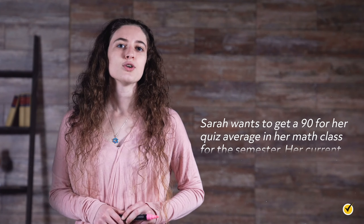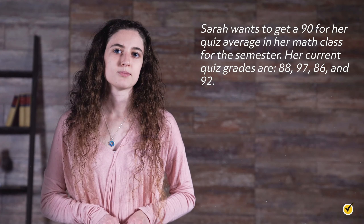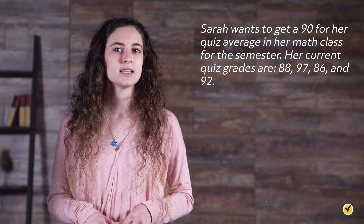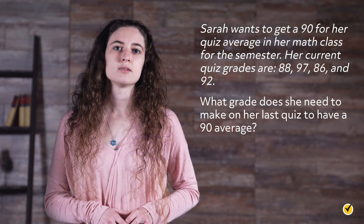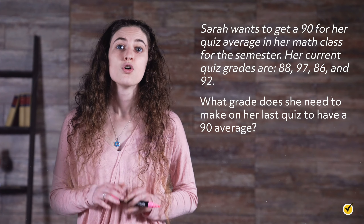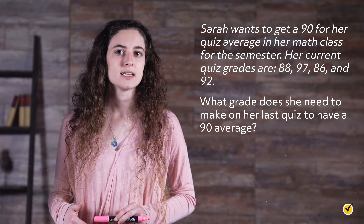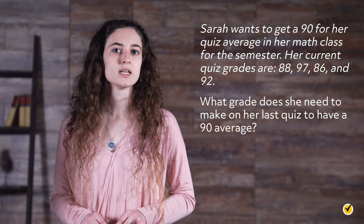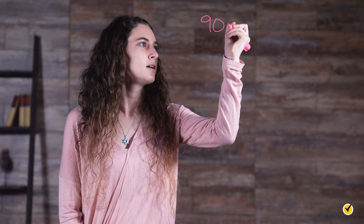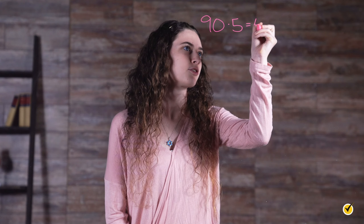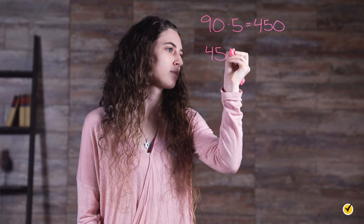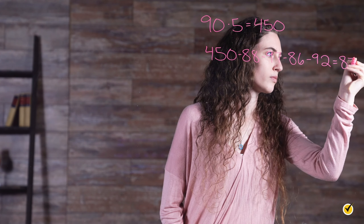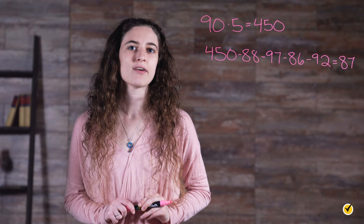Let's look at how to use this in real life. Sarah wants to get a 90 for her quiz average in her math class for the semester. Her current quiz grades are 88, 97, 86, and 92. What grade does she need to make on her last quiz to have a 90 average? First, we are going to multiply her desired average, 90, by the total number of values. We are given four grades and know she has one more quiz, so our total number of values is 5. 90 times 5 is equal to 450. Now, all we do is subtract the values we already know from 450. She would need to get an 87 on her next quiz to have an average quiz score of 90.